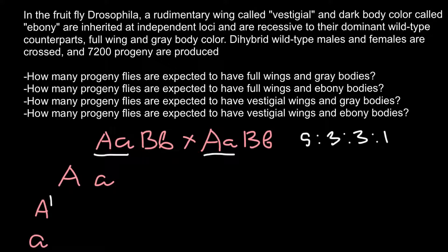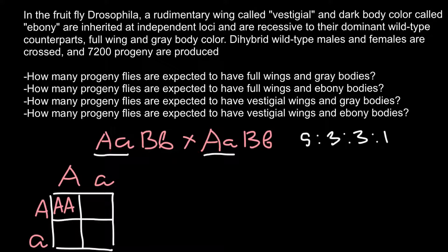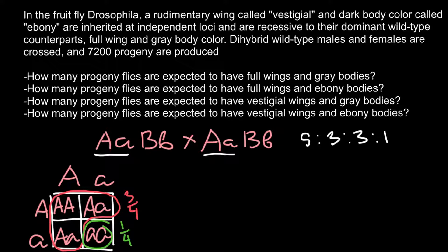In the following generation we can expect the following ratios of phenotypes: AA, Aa, Aa, and aa. As you can see, the result of such a cross would be three-quarters of the progeny having the dominant phenotype — normal size wings — and one quarter having vestigial wings. Now we are going to use the fork-line method.